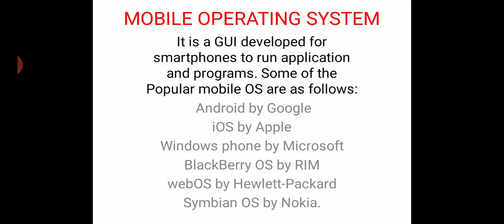Then mobile operating system: as we are using different types of mobiles nowadays, android phones are very often used by people. A mobile operating system is a GUI developed for smartphones to run applications and programs. Some of the popular mobile operating systems are Android, introduced by Google; iOS, introduced by Apple; Windows Phone, introduced by Microsoft; and BlackBerry, which has its own specific operating system.